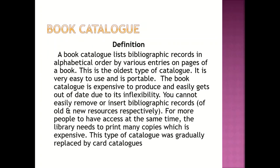Let's look at the definition of the book catalog. A book catalog lists bibliographic records in alphabetical order by various entries on pages of a book. This is the oldest type of catalog. It is very easy to use and very portable. However, the book catalog is expensive to produce and easily gets out of date due to its inflexibility — you cannot easily remove or insert bibliographic records. For more people to have access at the same time, the library may need to print many copies, which is expensive. This type of catalog has been gradually replaced by card catalogs.